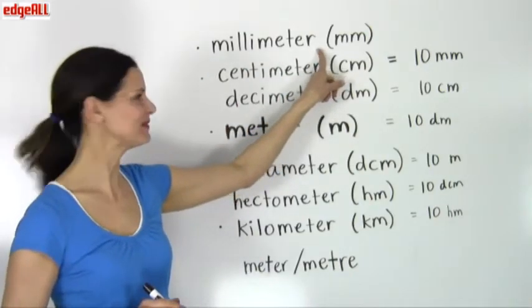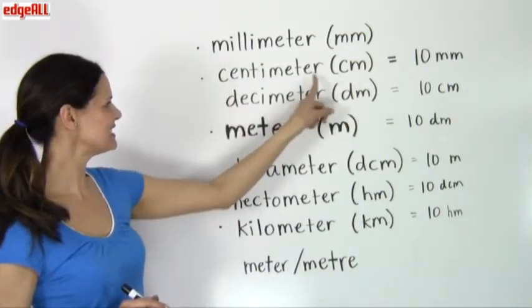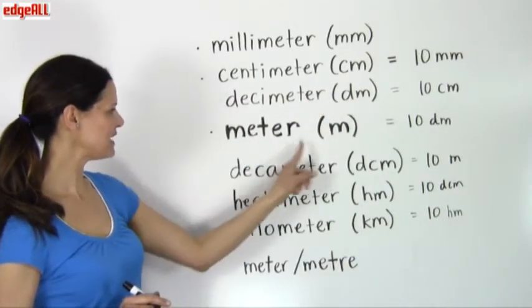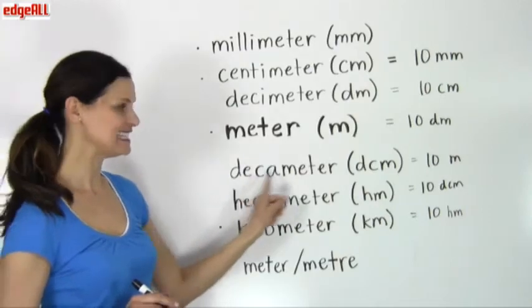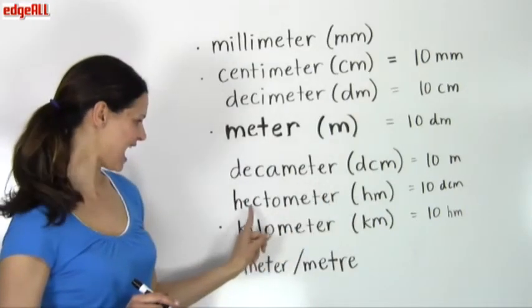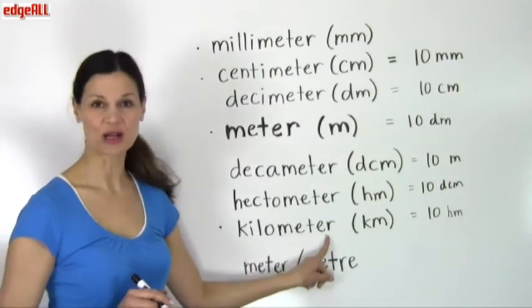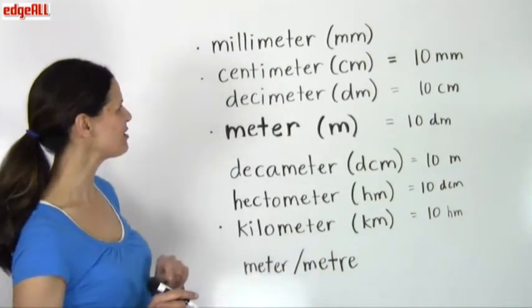We'll start with the smallest, which is millimeter, and then centimeter, decimeter, meter, decameter, hectometer, and kilometer or kilometre, depending on how you pronounce it.